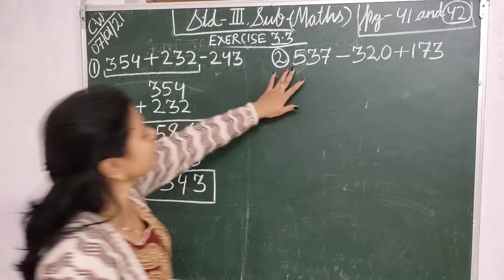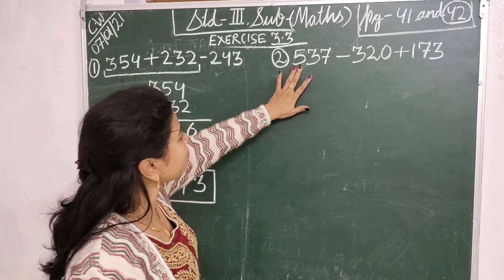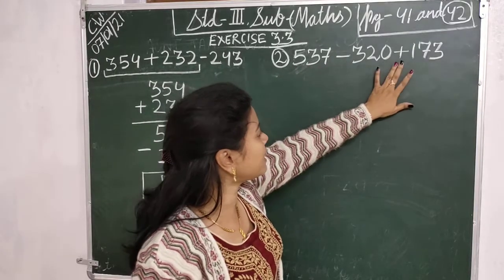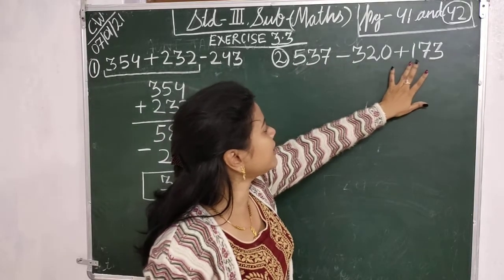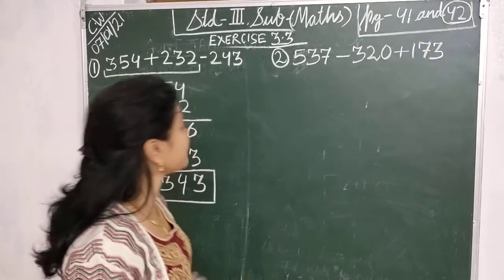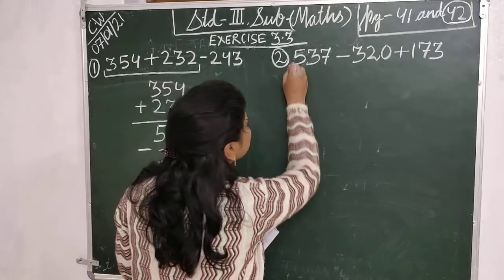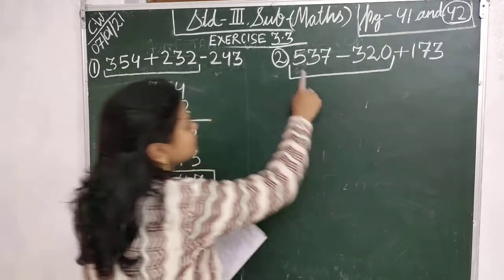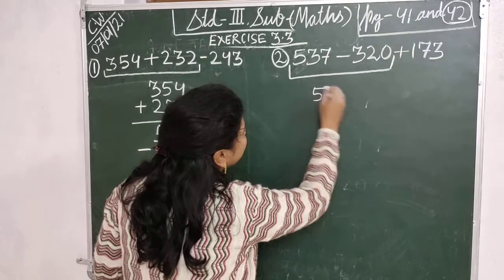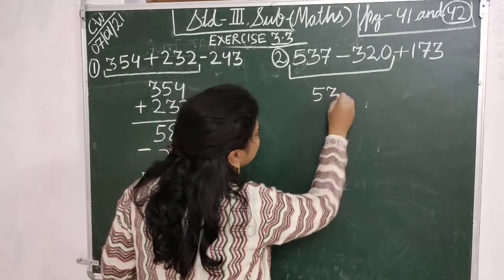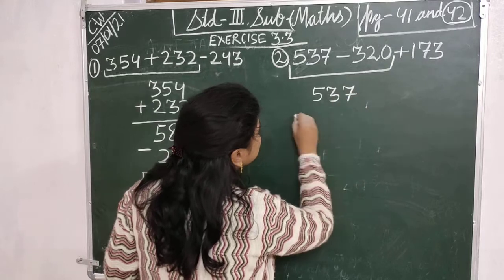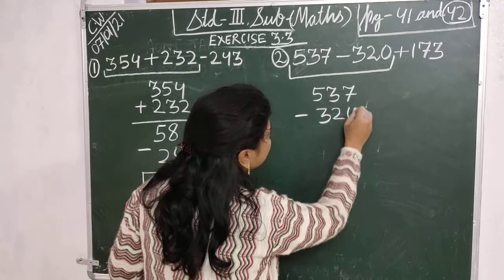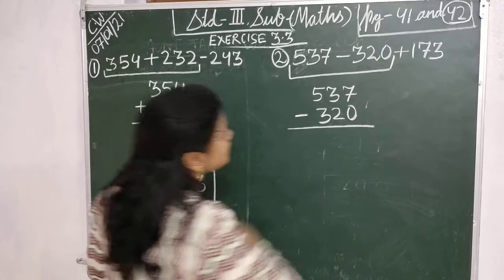Then question number 2: 537 minus 320 plus 173. Here, students, you have to first subtract these numbers. So 537 minus 320 — let's start the subtraction.